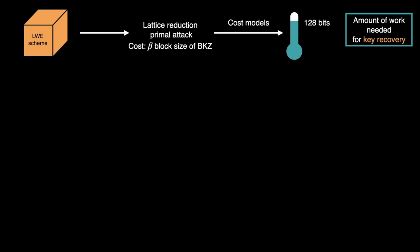Let us start with the motivation. Consider a learning with error based cryptographic scheme. To estimate its security, one needs to estimate the cost of the lattice reduction primal attack. This cost is represented by a parameter, the block size of BKZ algorithm, denoted beta. Once this beta is found, there are many cost models to derive a bit security. Most models suggest a multiplicative factor of around 0.3. At the end, we obtain a bit security which represents the amount of work needed for a key recovery.